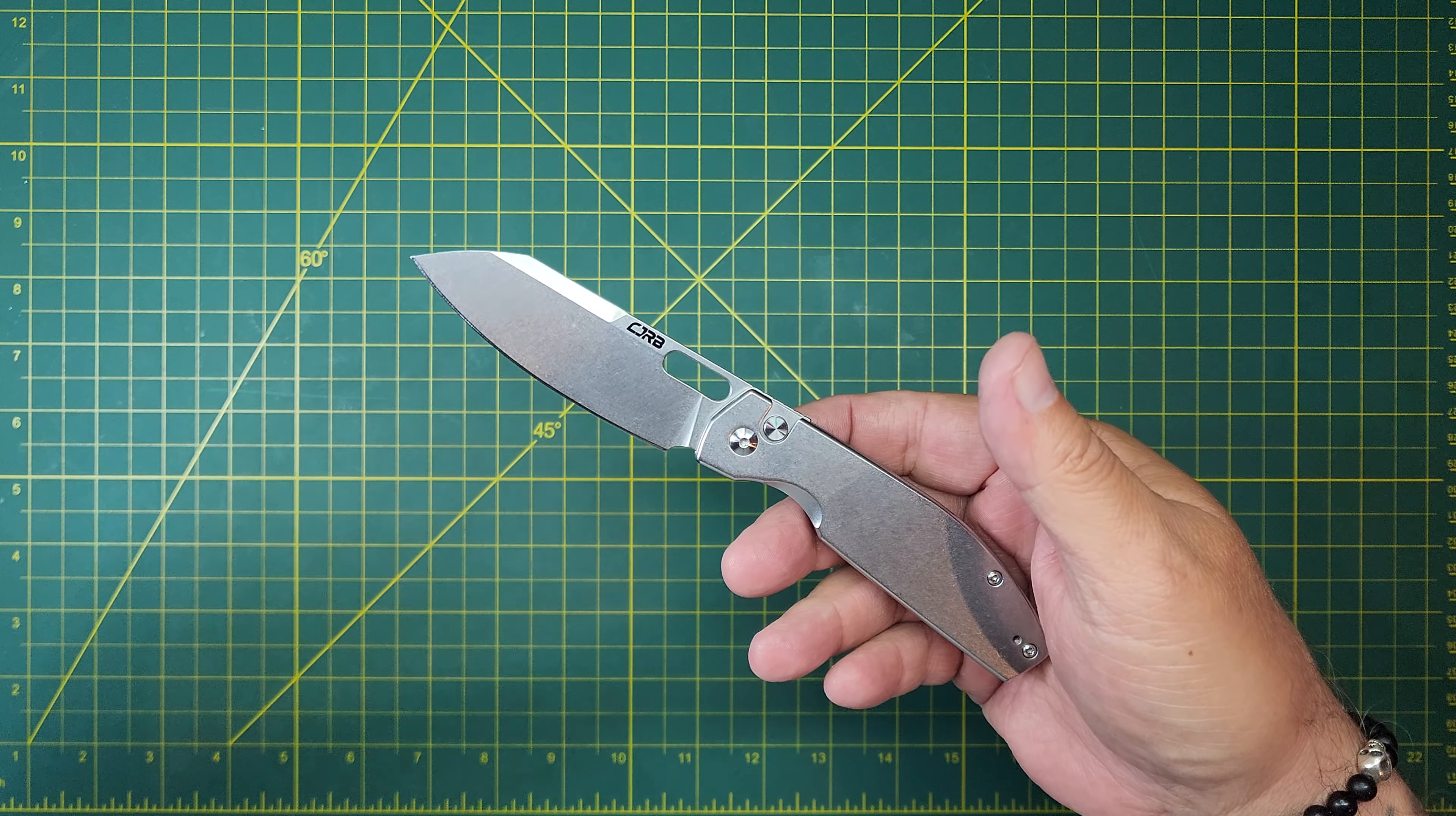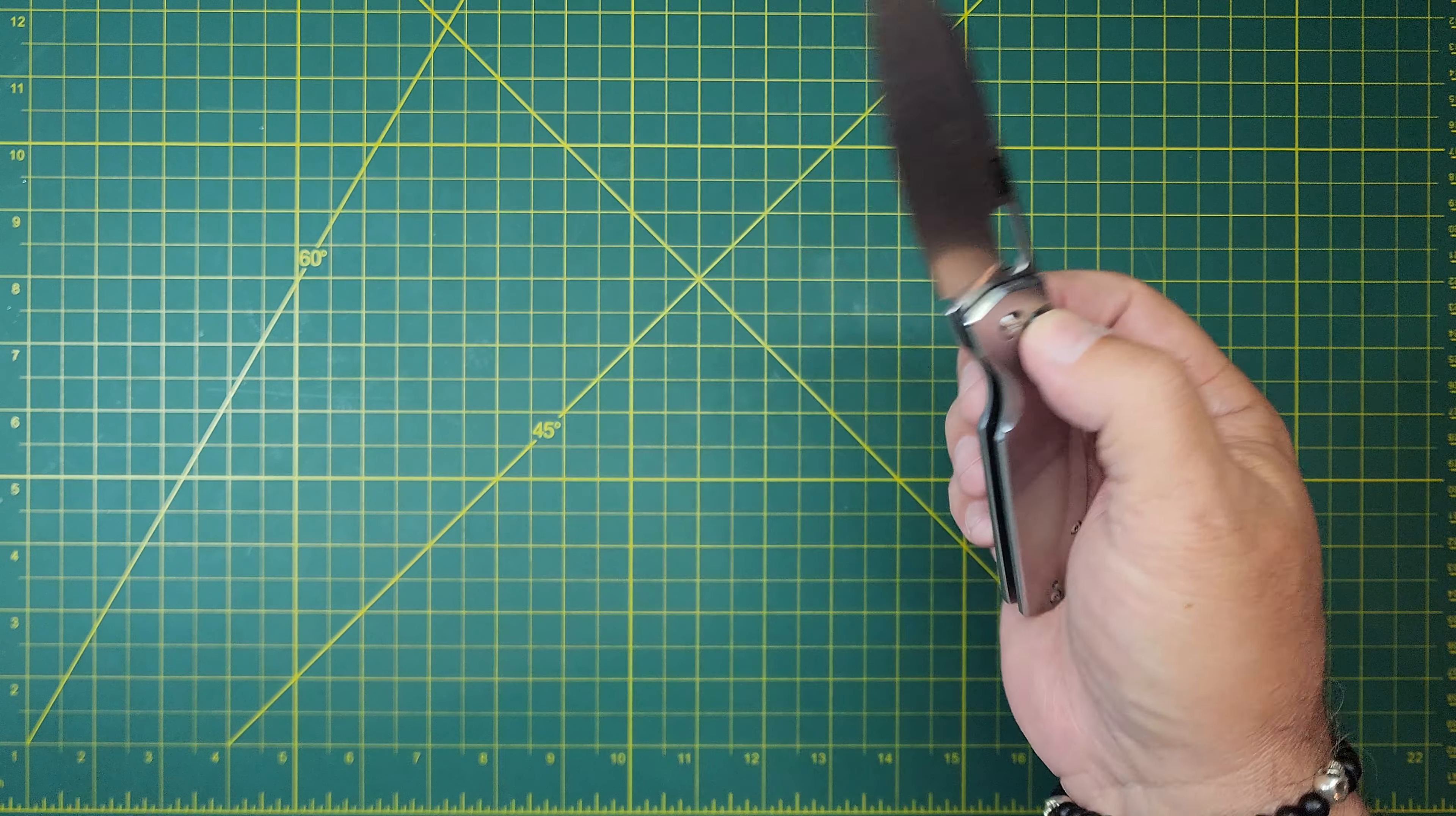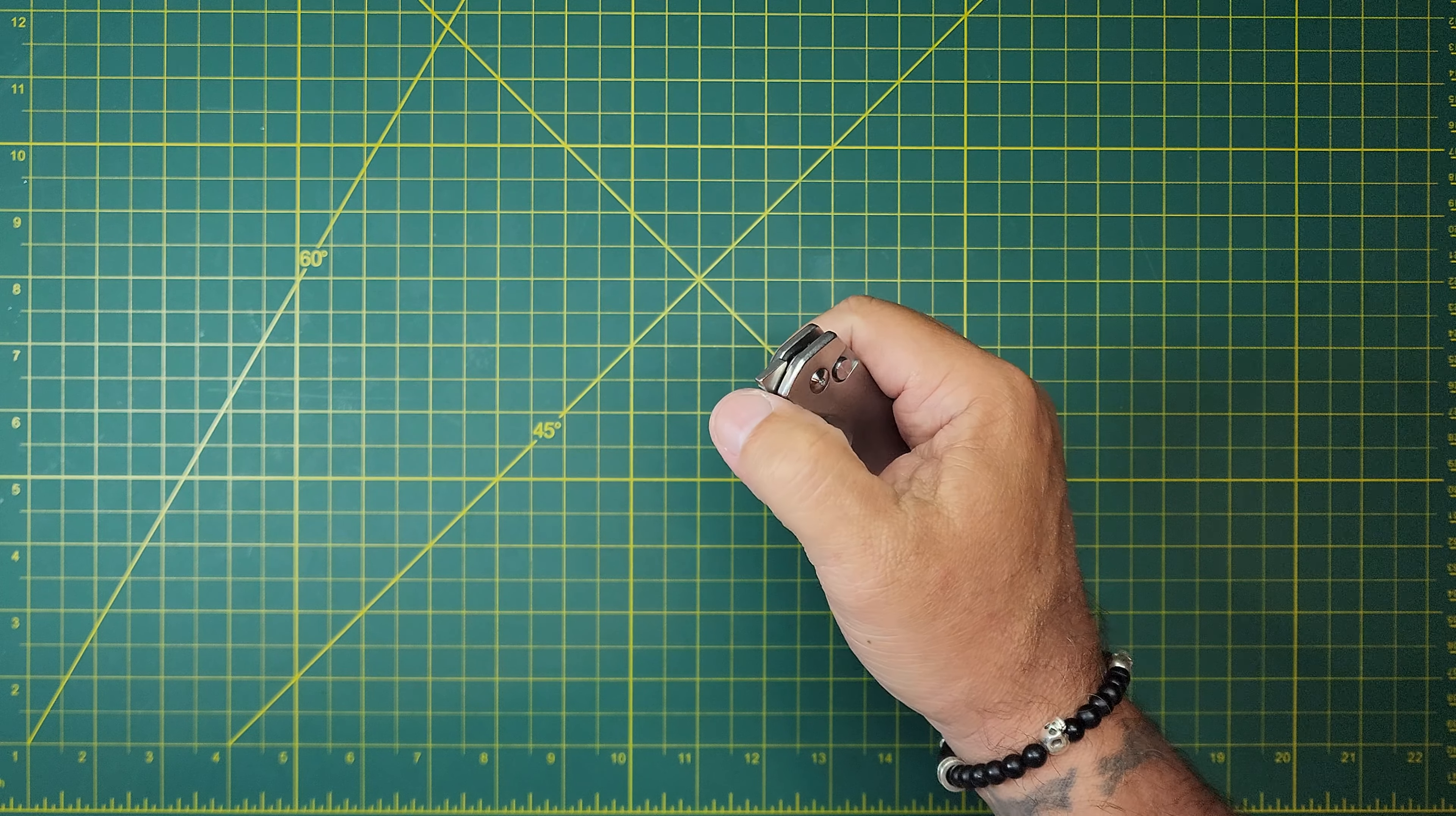But anyways, these were the hot ticket, the other CJRB was super hot, and I saw this one. Something about this one and the blade shape that I liked better, so I got this one. And the action on this is stupid good. I mean, I get the hype as soon as I put it in my hand.